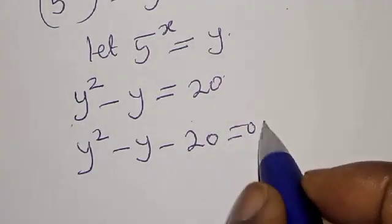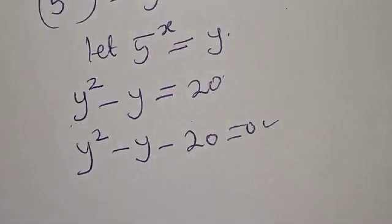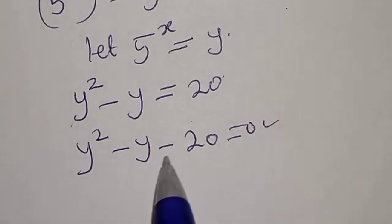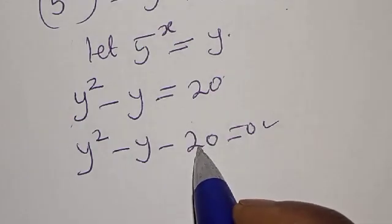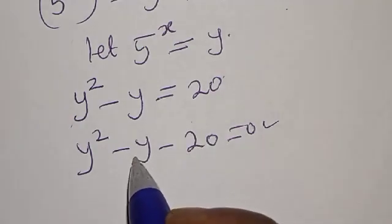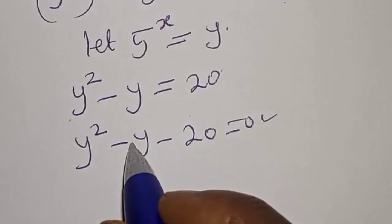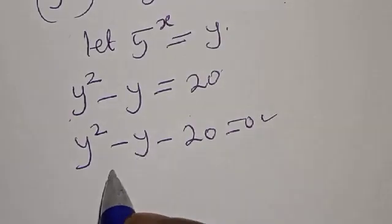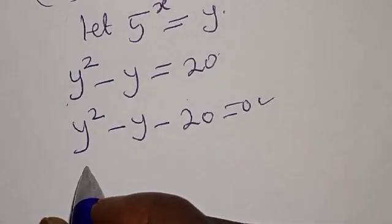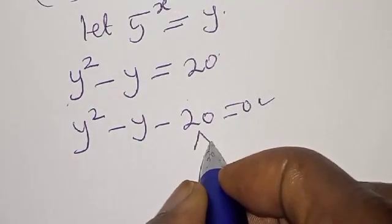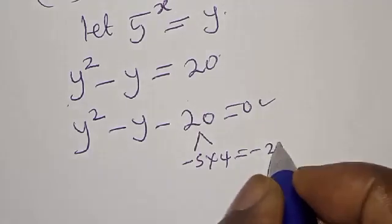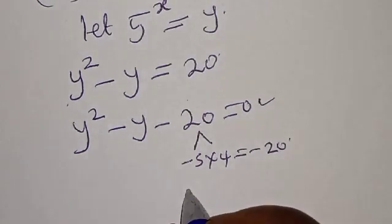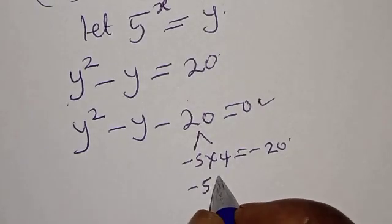This is a quadratic equation which can be solved by either factorization or using the quadratic formula. In this case I'm going to use the factorization method. We look for two numbers such that the product gives minus 20 and the sum gives minus 1, because the coefficient of y is minus 1.